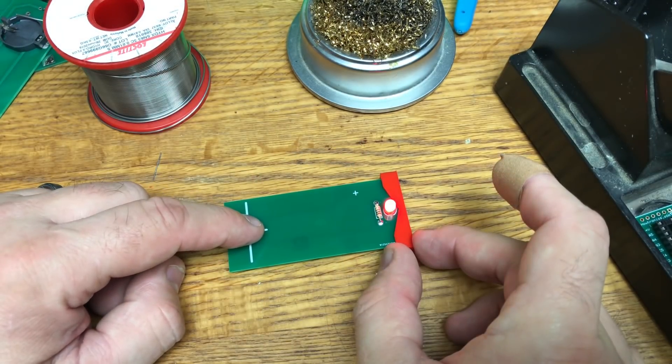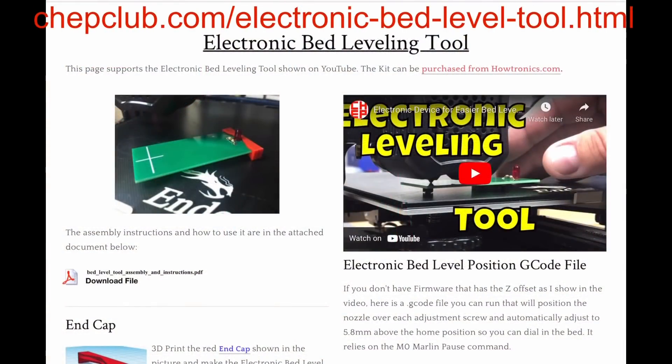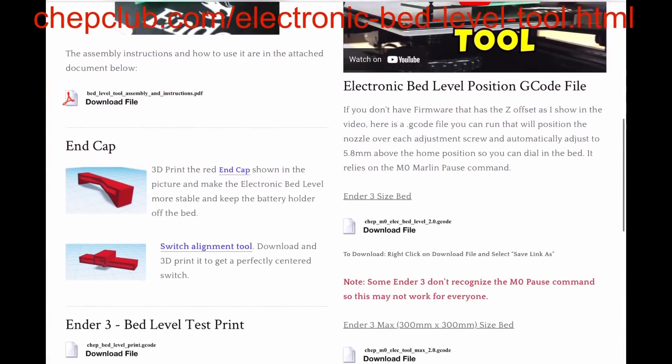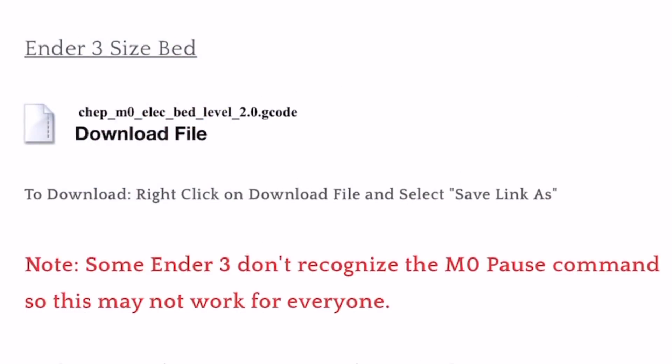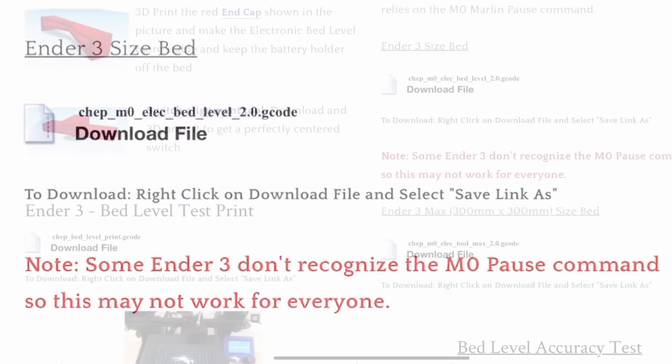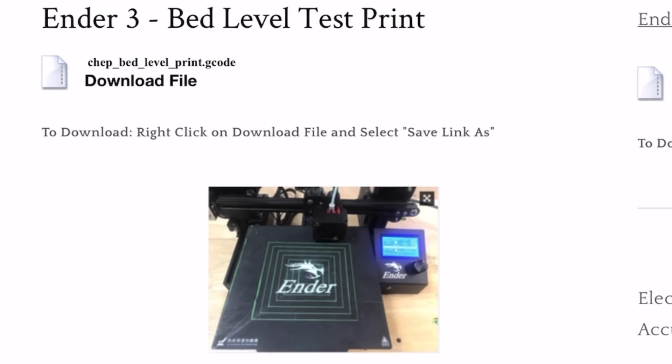The next step is to download the gcode files that I created to make this tool more useful. You go to my electronic bed leveling tool at chepclub.com and you'll see all the files. There's the two 3D print files you can download for free and there's also a gcode file that positions the nozzle over the adjusters and handles the z offset for you. There's also the square test gcode file for finally testing your bed level.